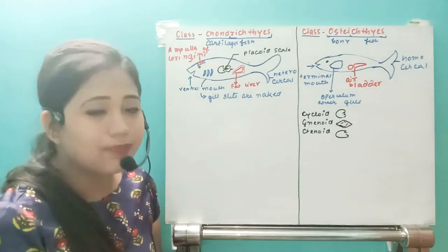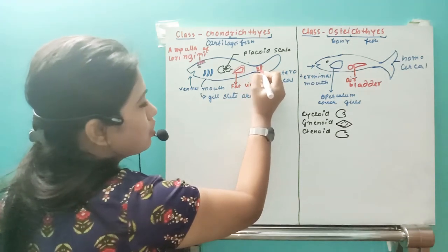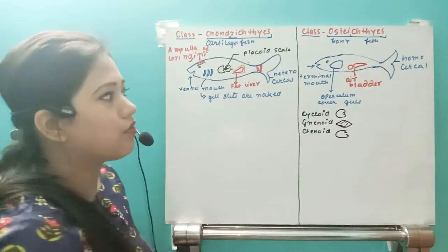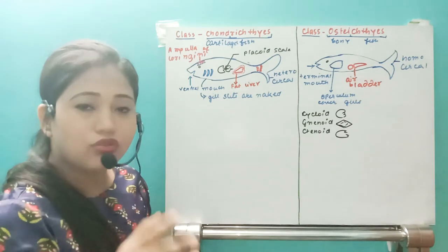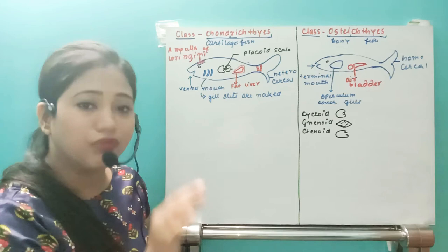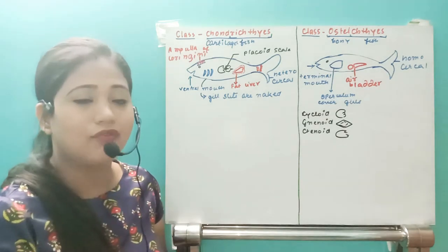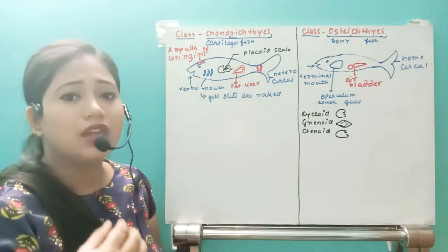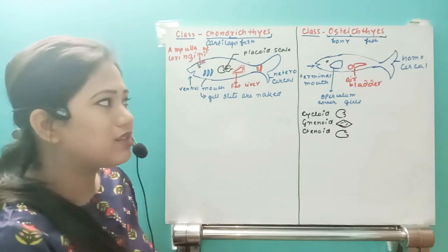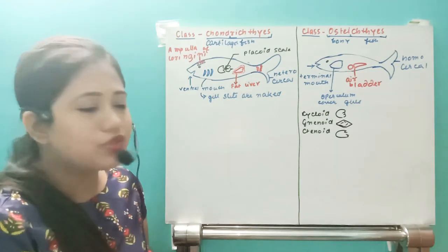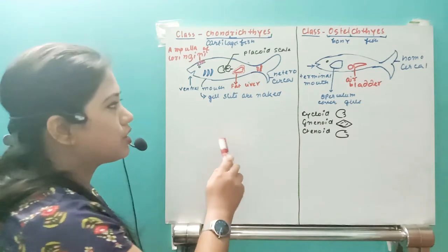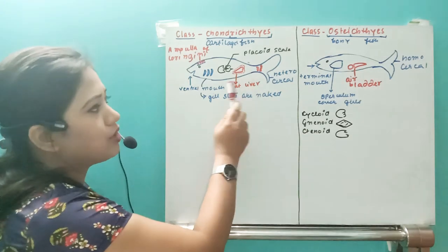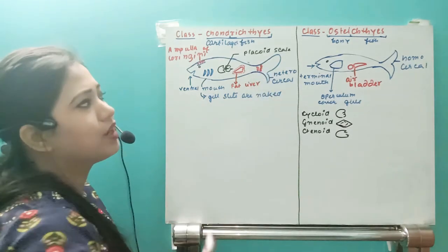Because Chondrichthyes lack an air bladder, they have two adaptations for buoyancy: first, fat deposition around the liver — since oil has a lower specific gravity than water, this helps them float slightly; second, thick musculature around the caudal fin so they can swim constantly. If they stop swimming they will sink. In Osteichthyes, the air bladder allows them to float without sinking even when not actively swimming.